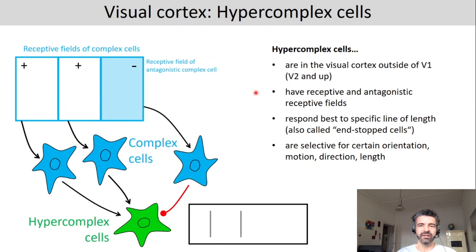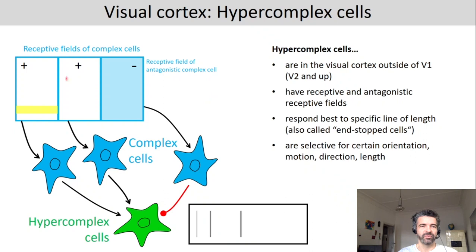Hypercomplex cells are more common in later processing stages — not so much in V1, but rather in V2 and particularly V3 and up. Hypercomplex cells have receptive and antagonistic receptive fields. They respond best to a specific line length, also called end-stopped cells. They are selective for certain orientation, motion, direction, and length — very specific activity. For example, with a given input, you get some increased activation at the hypercomplex cells. Note that complex cells feed into these hypercomplex cells.